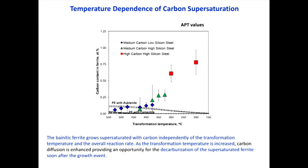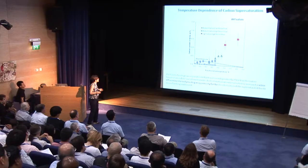In my opinion, what we have here is enough experimental evidence to state that bainite ferrite growth occurs supersaturated in carbon. But when we transform at higher transformation temperatures, all the secondary processes that are controlled by carbon diffusion are activated. We need to investigate those processes at the atomic scale as well.